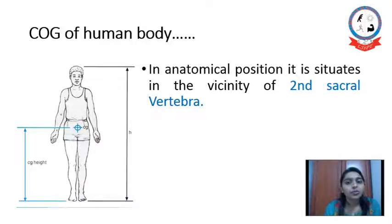Let's see the center of gravity in human body. Where the center of gravity is situated in human body? If we see in anatomical position, it is situated in the vicinity of second sacral vertebra. In anatomical position, we can confirm its position. The position of COG may vary according to position of COG variation is according to the gender,